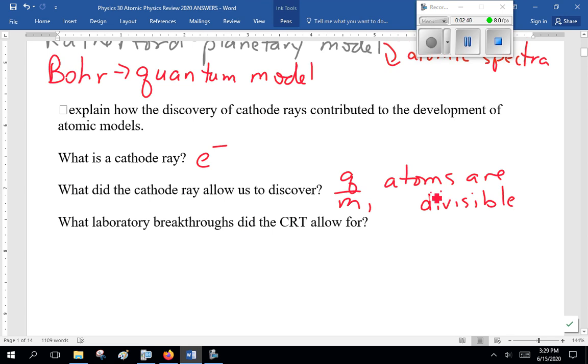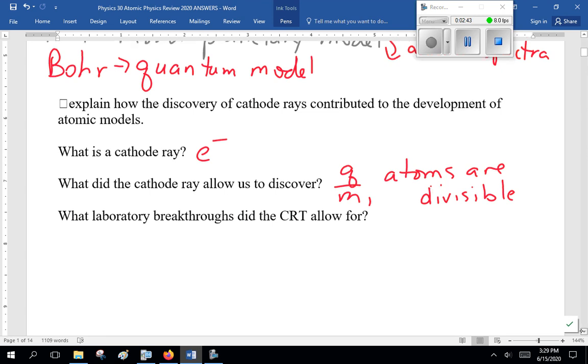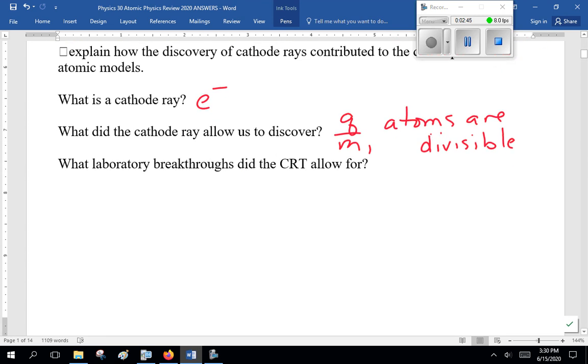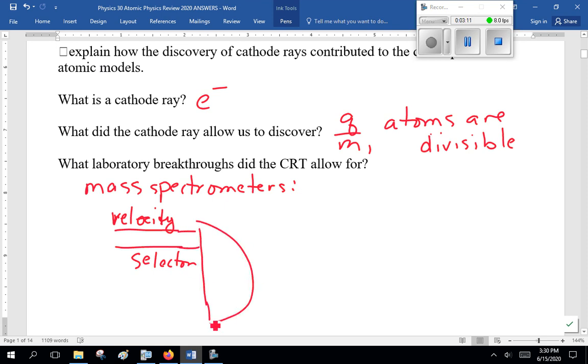What laboratory breakthroughs did the CRT allow for? Well, the cathode ray tube allowed for mass spectrometers. Now, we talked about those forces in electric and magnetic fields, so electromagnetism. But you have a velocity selector.